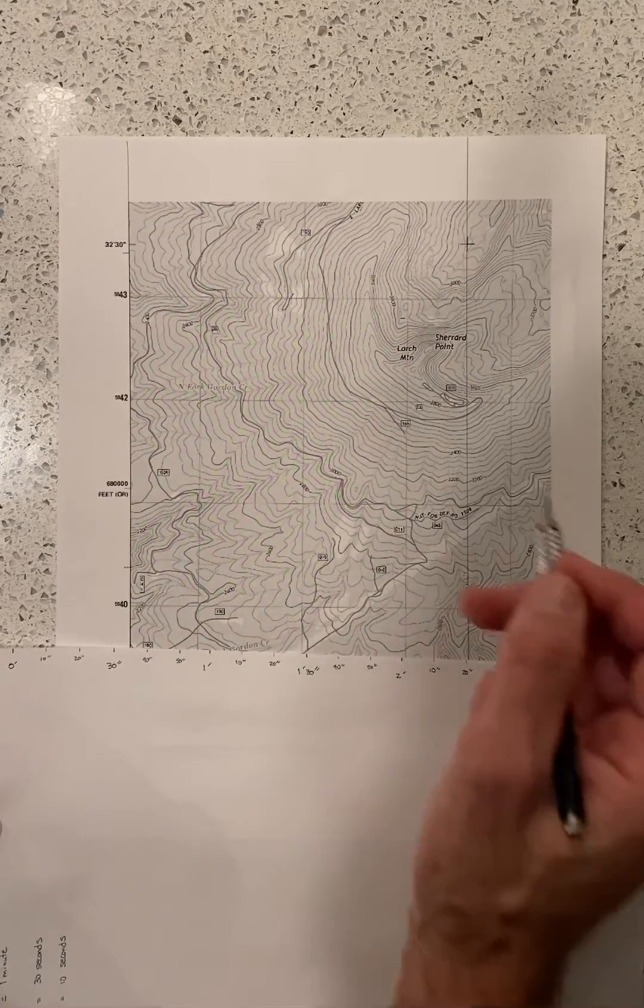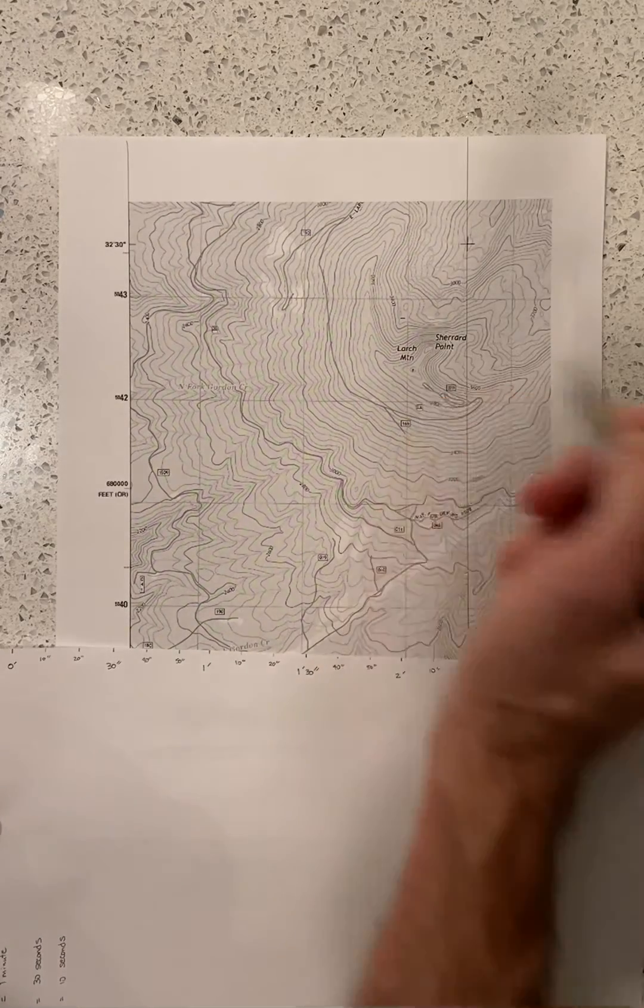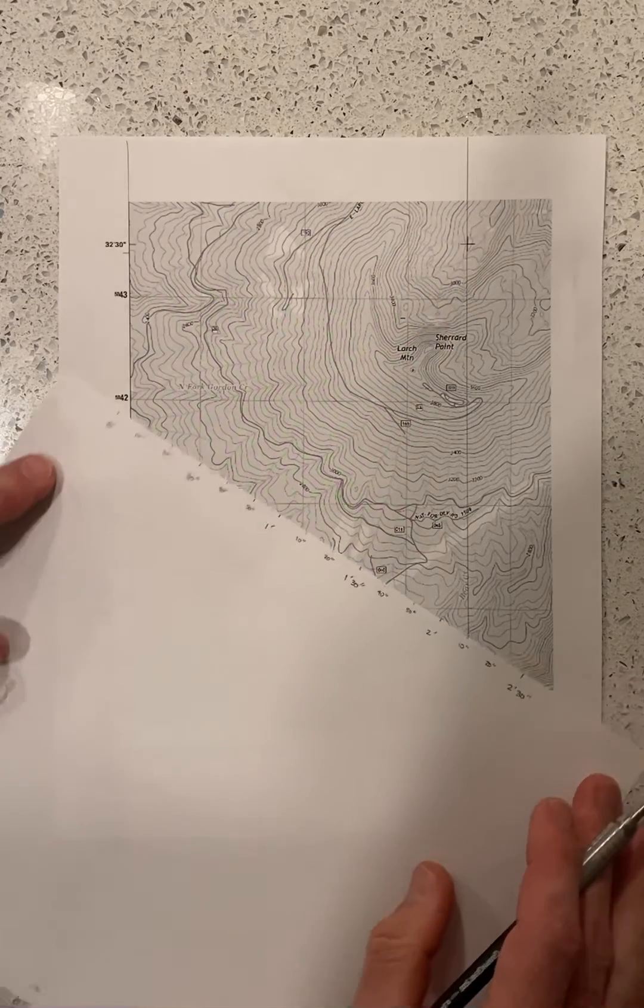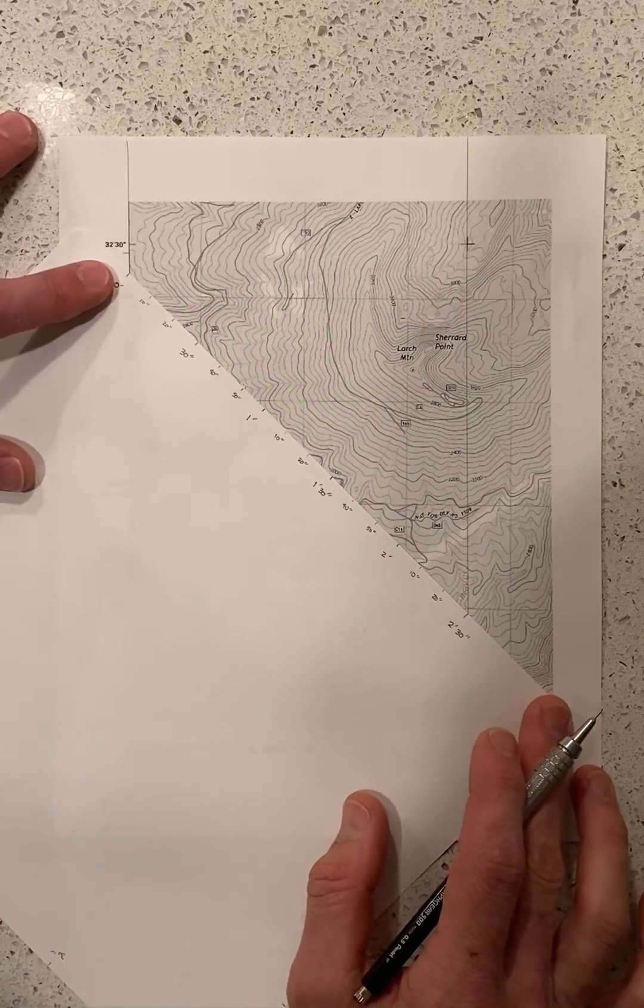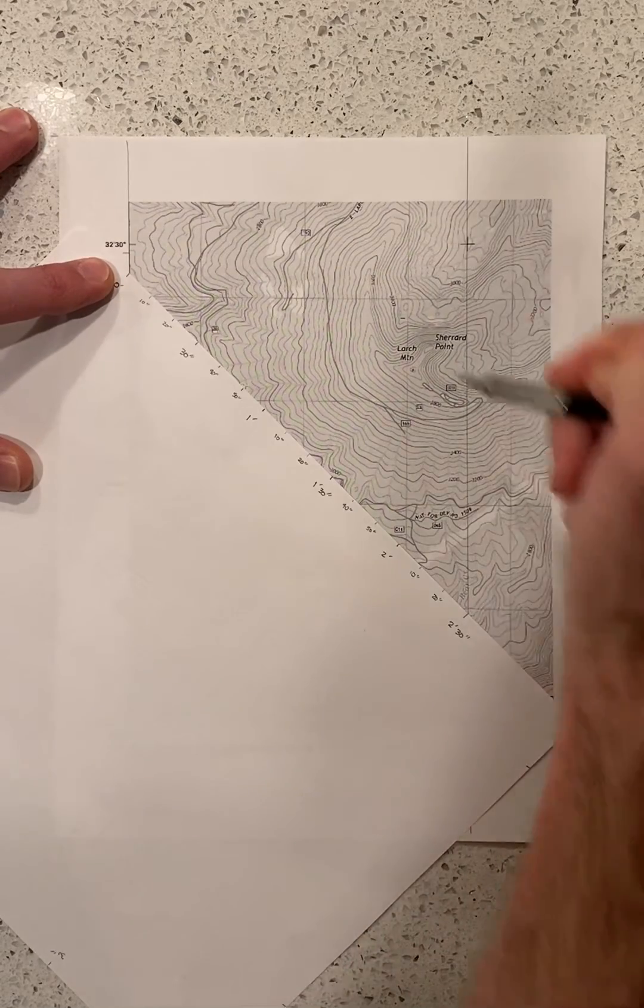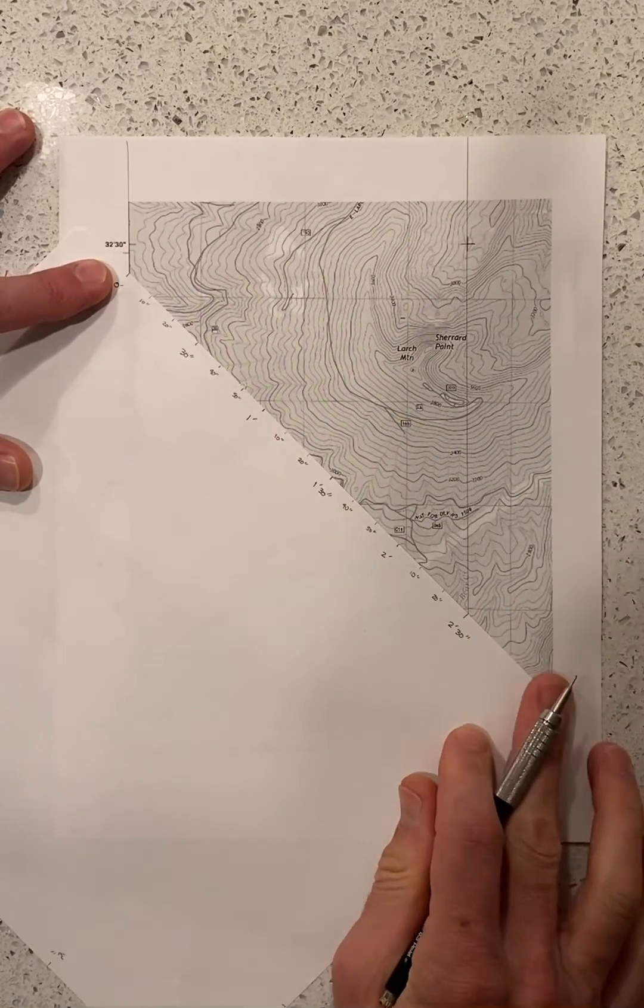We would then just slide it up to where it makes contact. Now here we run off the page, so we would have to have another piece of paper.